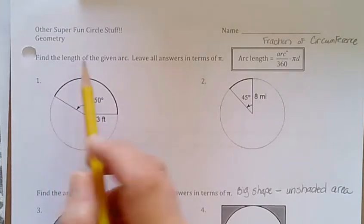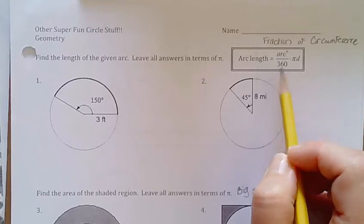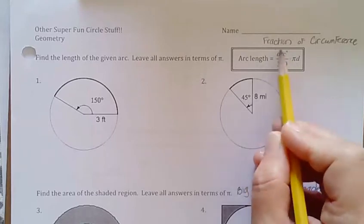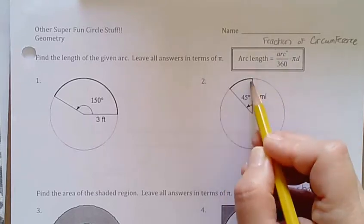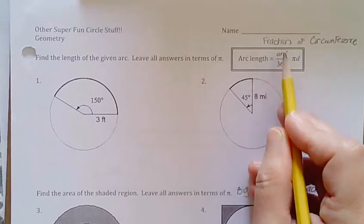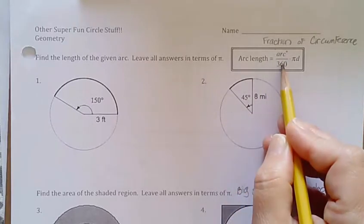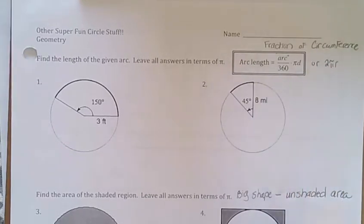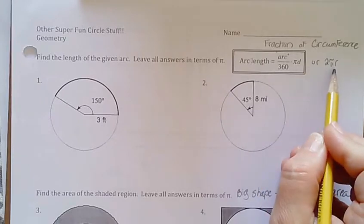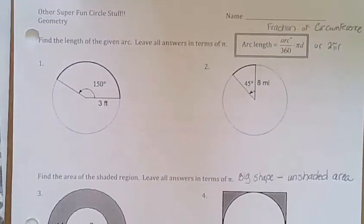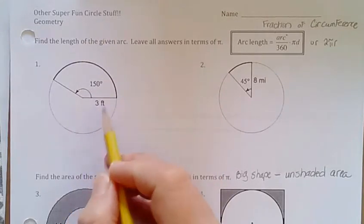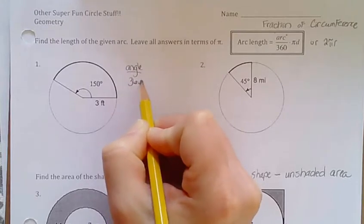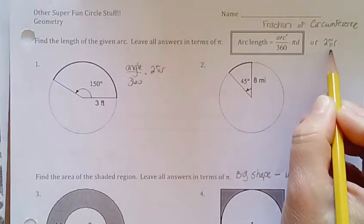We already did arc length. Remember that arc length was a fraction of the circumference. So it's going to be this angle which is the same as the arc, so the angle or arc divided by your entire 360 around times your circumference which is either pi d or 2 pi r. You can use either of these circumference formulas depending on what they give you. So we go over here. They do give me the radius. So maybe I will do angle divided by 360 times 2 pi r.